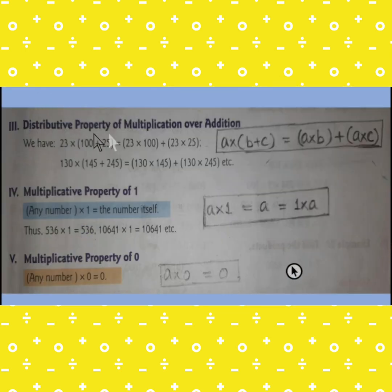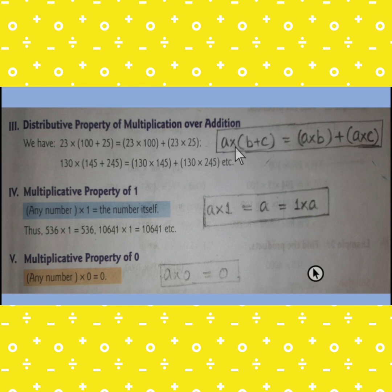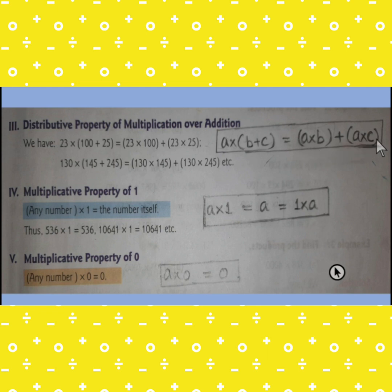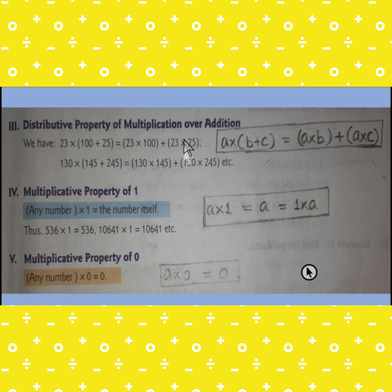Next is the distributive property of multiplication over addition. It is A into (B plus C) equals A into B plus A into C — the multiplication is distributed over B and then over C. For example, 23 into (100 plus 25): 23 is first multiplied to 100, then plus 23 multiplied to 25.